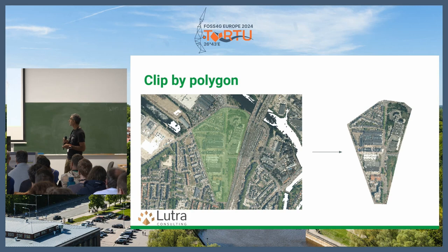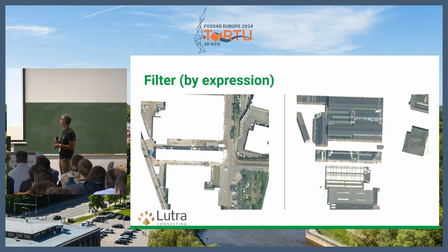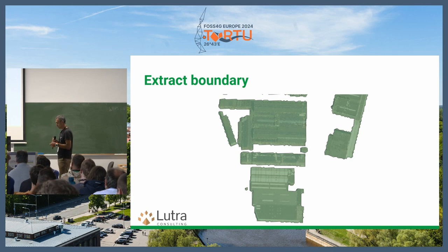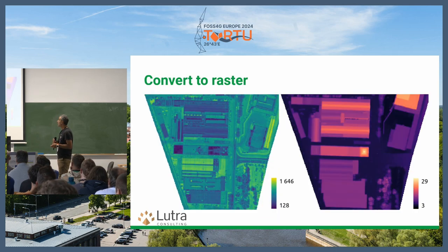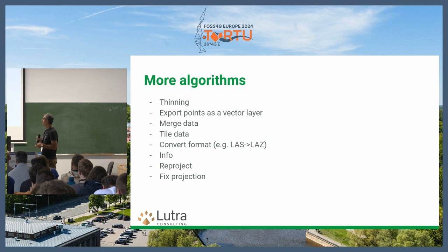These tools include: clip by polygon, density, filter by expression, extract boundaries — here we've exported building polygons — convert to raster based on point cloud values or with interpolation, tiling, converting data, merging data, and thinning data. If you're interested in more algorithms not yet there, feel free to come and talk to me later.